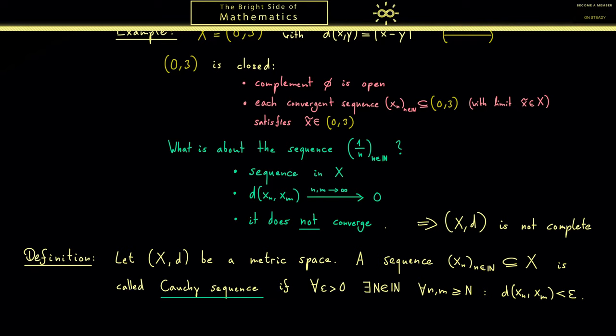What you should be able to show now is if you have a convergent sequence, then this thing is also fulfilled. A Cauchy sequence is therefore always a generalization of a convergent sequence. So you see there is no limit, there is no x tilde in the definition of a Cauchy sequence. Hence it would be much nicer working with this definition than working with the one for convergent sequences.